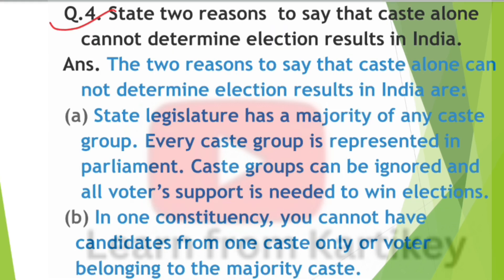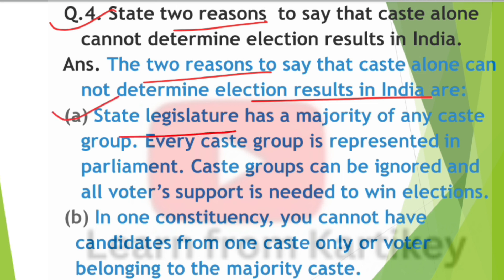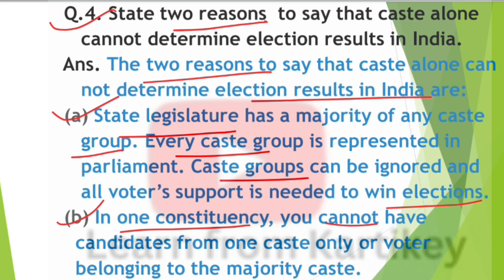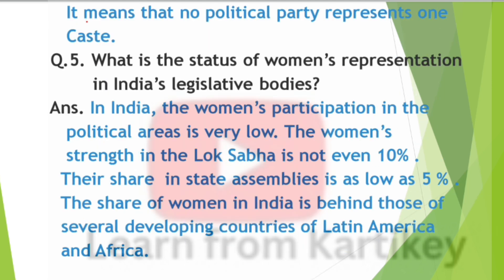Question number 4: State two reasons to say that caste alone cannot determine election results in India. First — no state legislature has a majority of any single caste group, so all voter support is needed to win elections. Second — in one constituency you cannot have candidates for one caste only, meaning no political party represents just one caste.